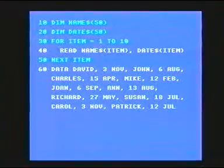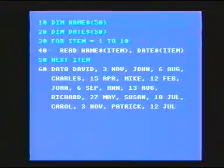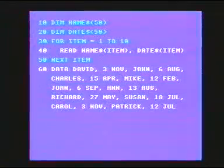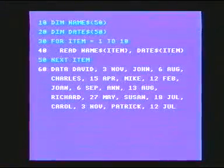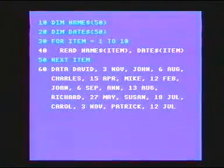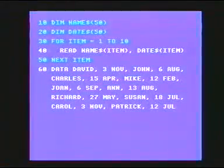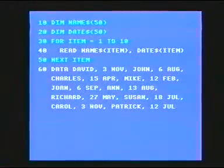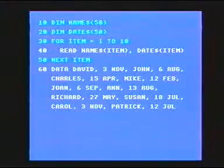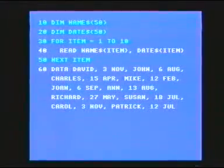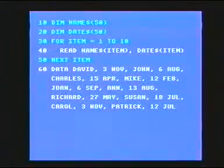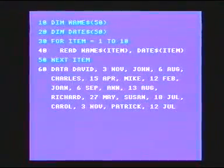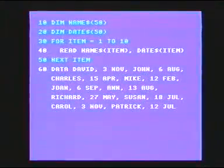We're going to read, for the first time through the loop, name string 1 and date string 1. It will read in David and call it name string 1, and the 3rd of November and call it date string 1. The next time around the loop it will read name string 2 — contents will be John — and date string 2, which will be the 6th of August, and so on until it's read in the whole of that data and set up the array.